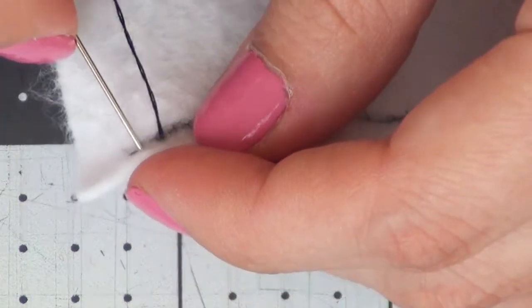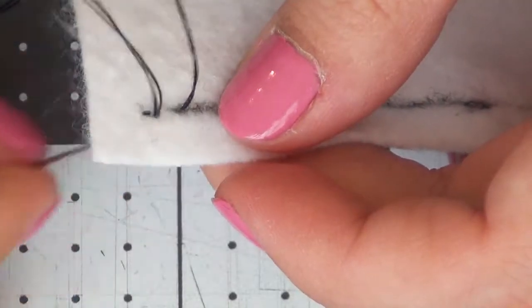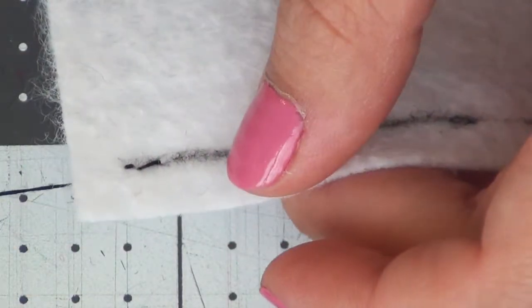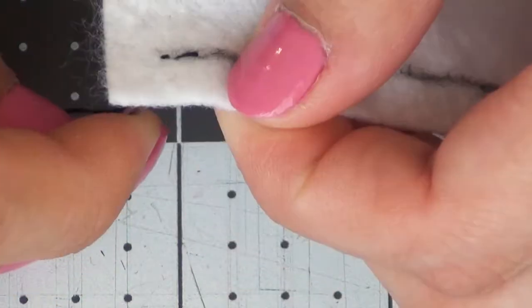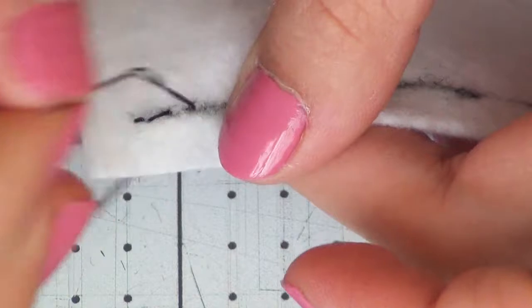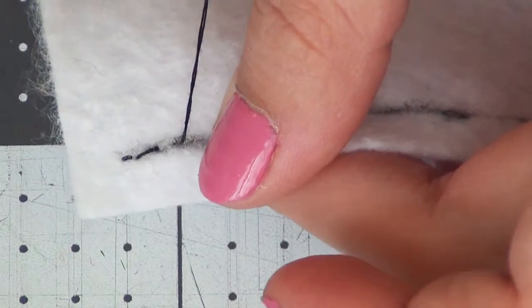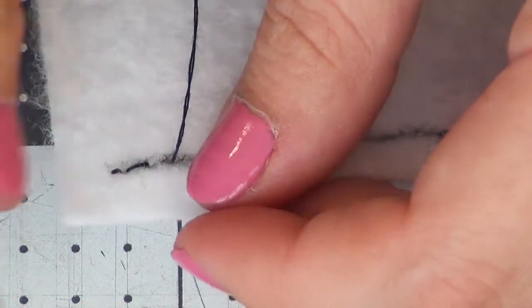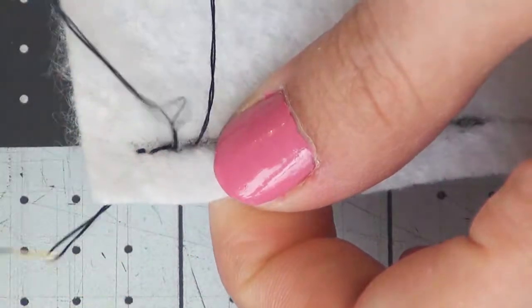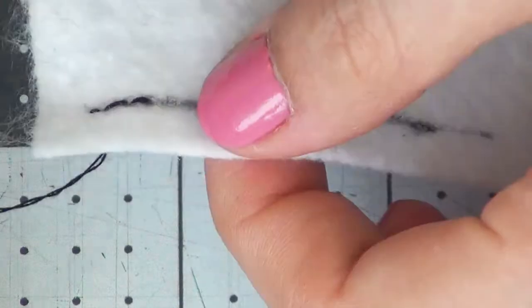We're going to start by going right in front of that last stitch going toward the bottom of the fabric. Then you're going to take your needle and come up once again the one eighth or one fourth inch that you're using in front of the beginning of that stitch and pull it through, and then go back once again right before the last stitch and go down through your fabric.